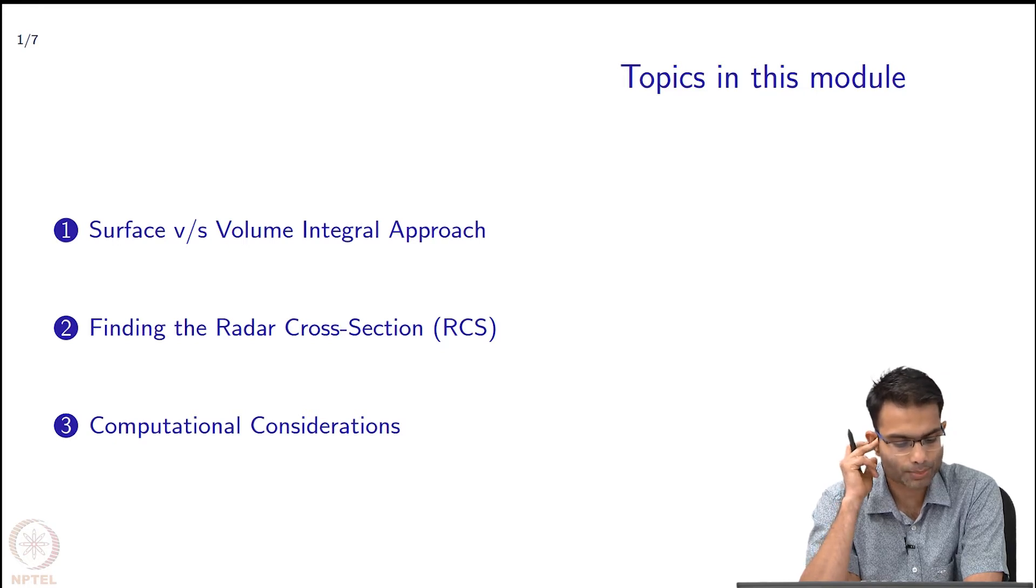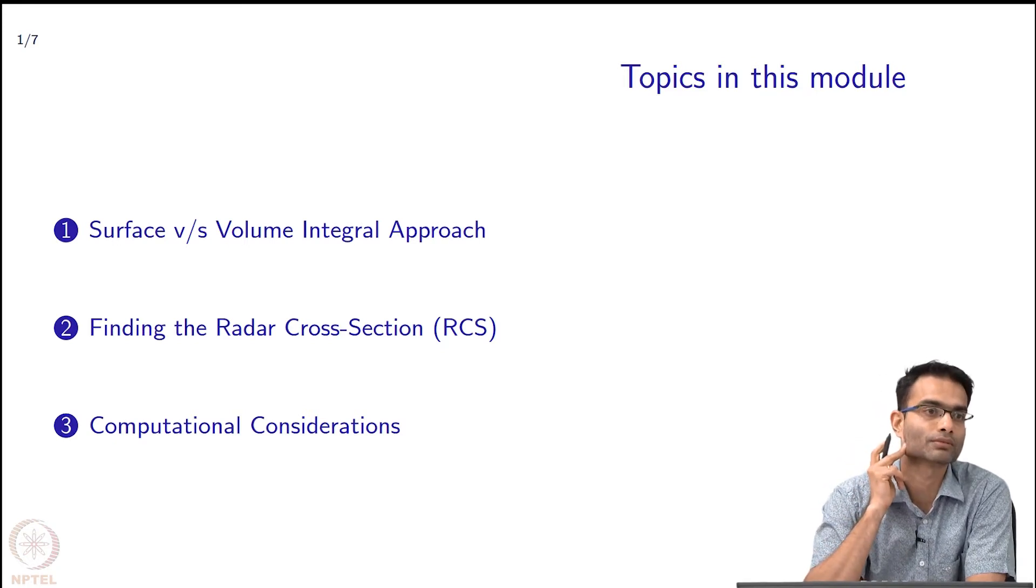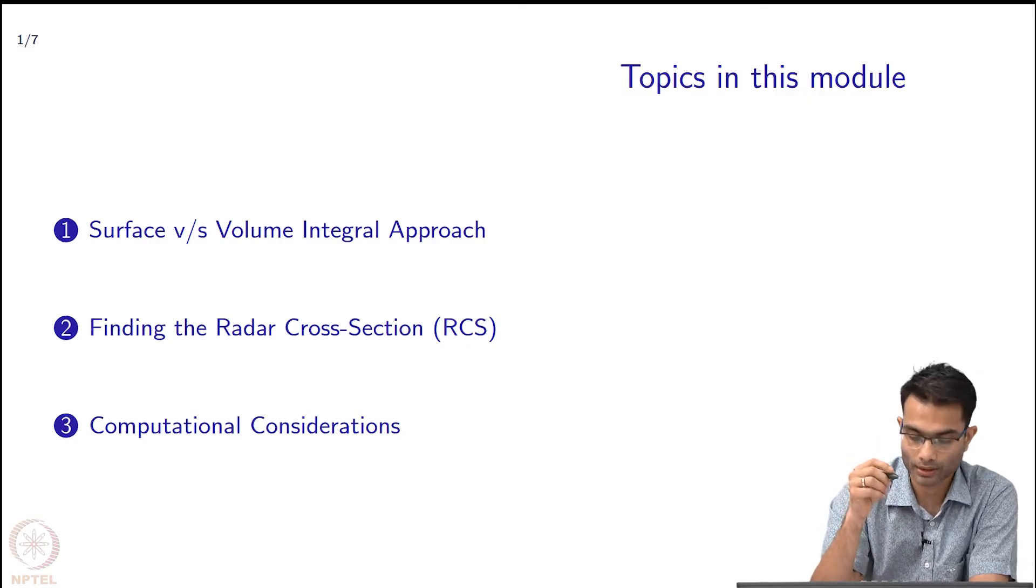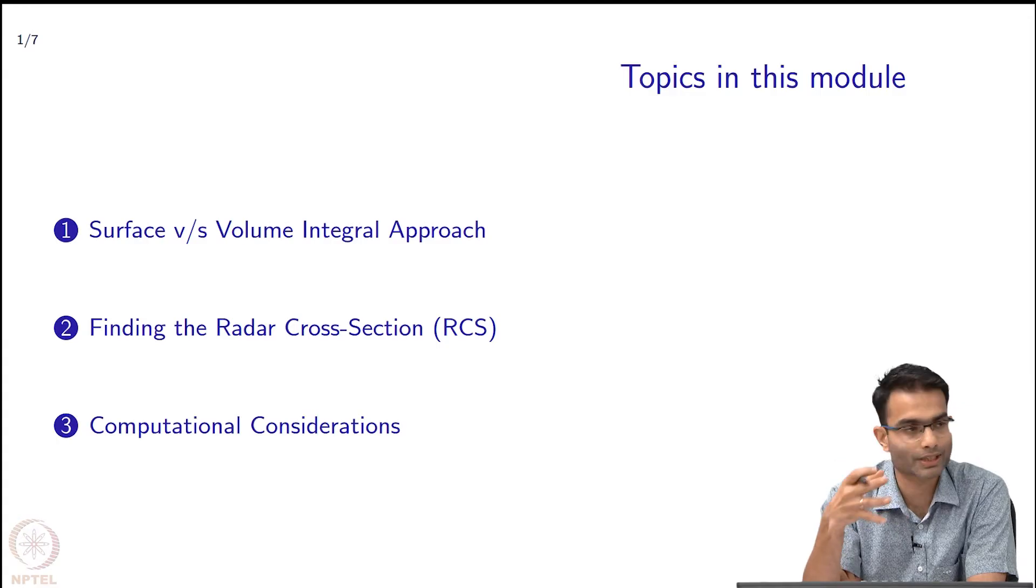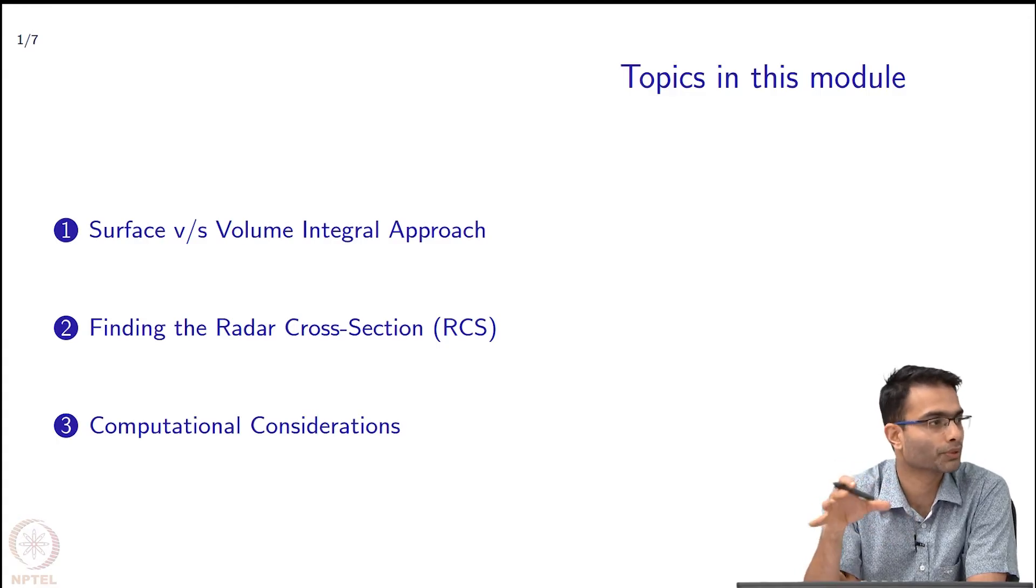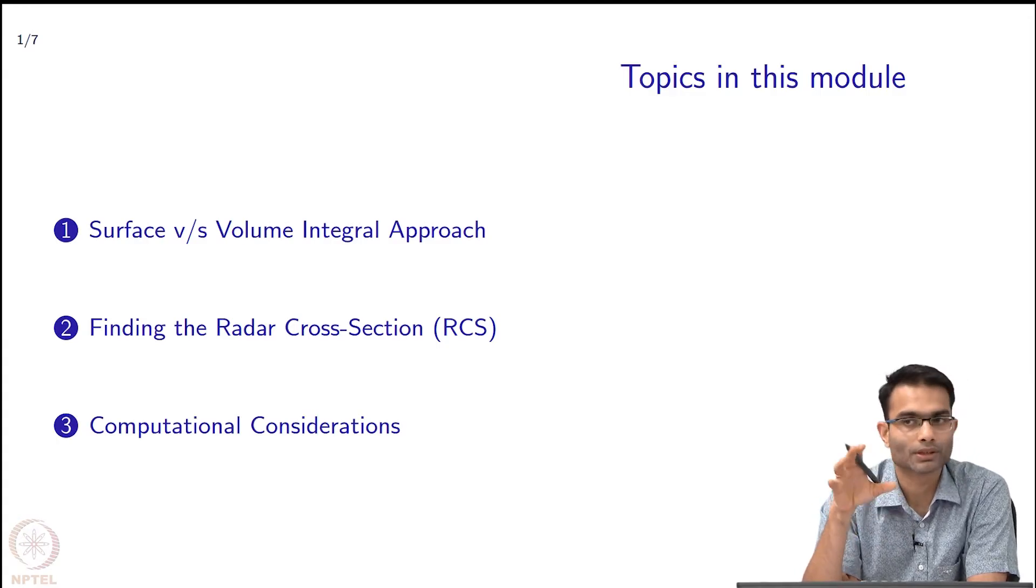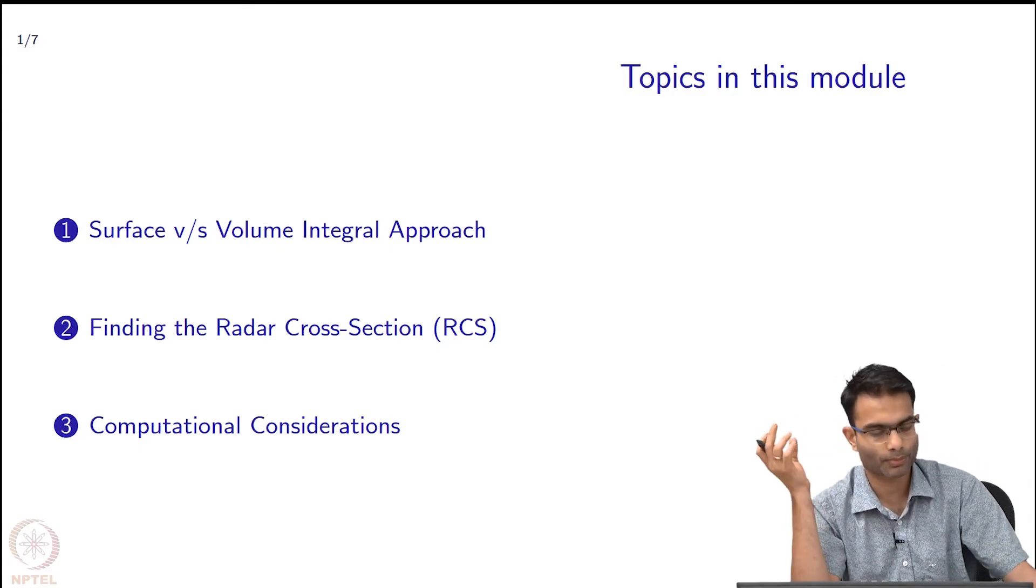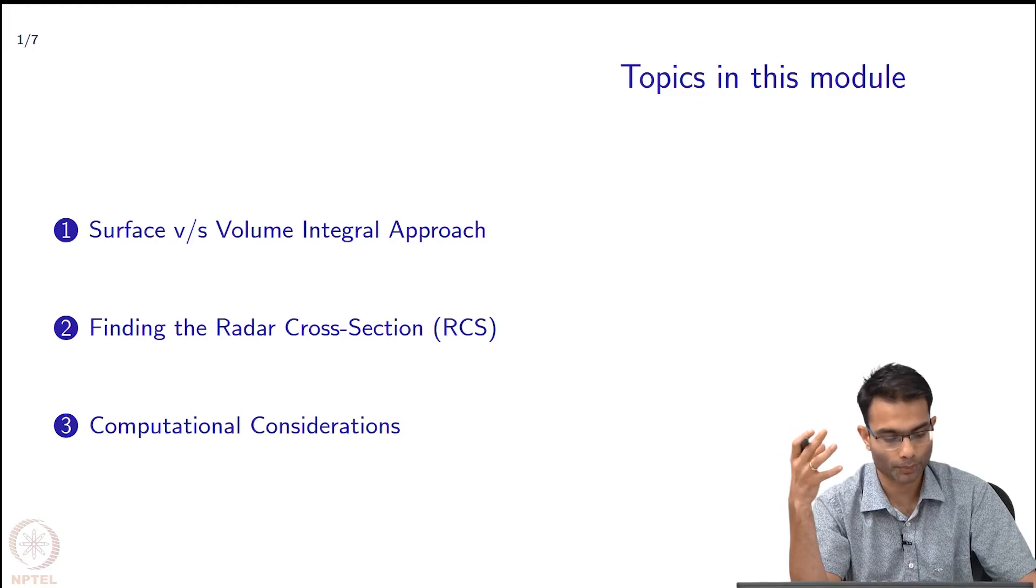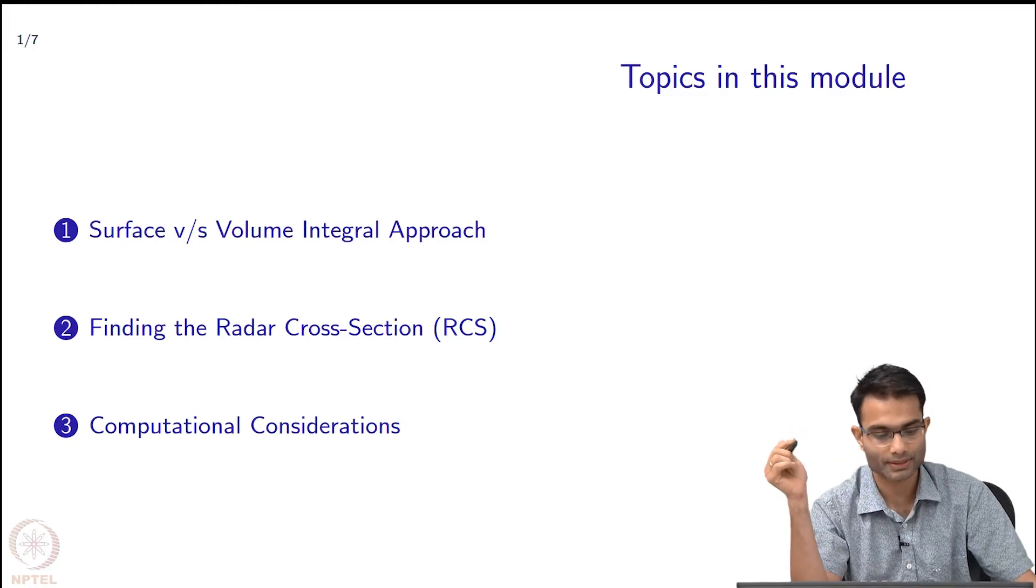The new concept over here is going to be that of the radar cross section which is abbreviated as RCS. So, that is like, you know, all the theory that we have learned, how do we finally put it into use to calculate something useful, and a little bit, a small word about some of the computational issues that you will face in this.